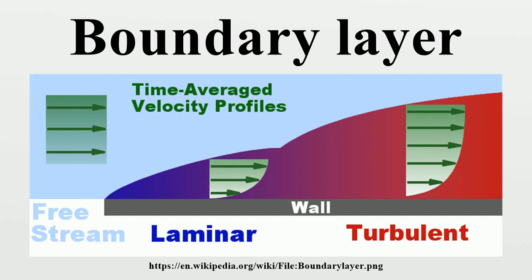Since the static pressure is independent of the wall-normal direction, the pressure at the edge of the boundary layer is the pressure throughout the boundary layer at a given streamwise position. The external pressure may be obtained through an application of Bernoulli's equation. For a flow in which the static pressure does not change in the direction of the flow, the velocity remains constant, and the equation of motion simplifies accordingly. These approximations are used in a variety of practical flow problems of scientific and engineering interest. The above analysis applies to any instantaneous laminar or turbulent boundary layer, but is used mainly in laminar flow studies. This simplified equation is a parabolic PDE and can be solved using a similarity solution, often referred to as the Blasius boundary layer.